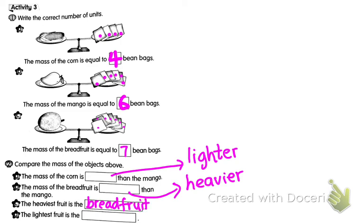The lightest fruit: comparing corn, mango, and breadfruit, the lightest is the one with the smallest number of bean bags. The lightest fruit is corn. To summarize: big means heavy, and small means light.